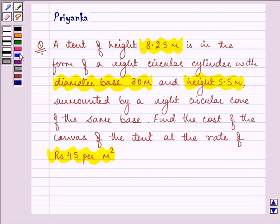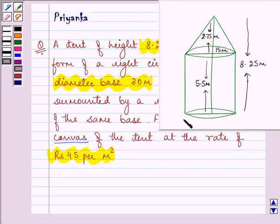Since we need to find the cost of the canvas, that means for this tent we need to find the total curved surface area. Now, the total height of the tent was given as 8.25 meters and that of the cylindrical base is 5.5 meters, so the height of the cone is 2.75 meters (8.25 minus 5.5). The base diameter is 30, so the radius will be 15. Let me write down all these given values.